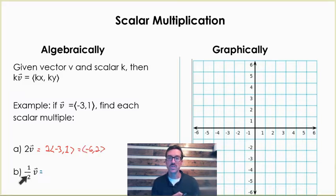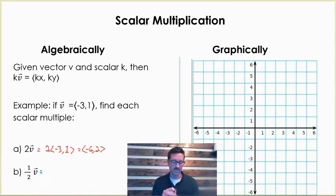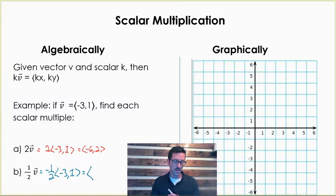Looking at our second example, there are actually two different things happening whenever we have a scalar of negative 1 half. There's the effect that the 1 half has, and there's the effect that the negative 1 has — but we'll talk about those when we look at it graphically. If I do negative 1 half times negative 3, 1, that's going to give me a horizontal component of positive 3 halves, because a negative times a negative is a positive, and a vertical component of negative 1 half.